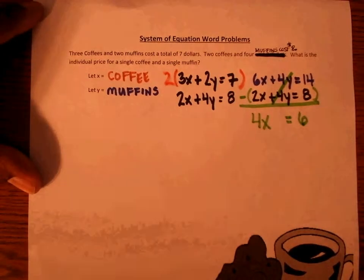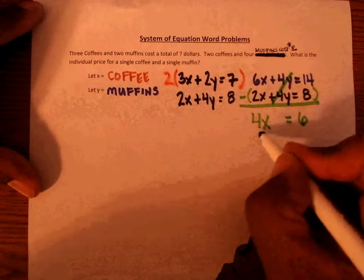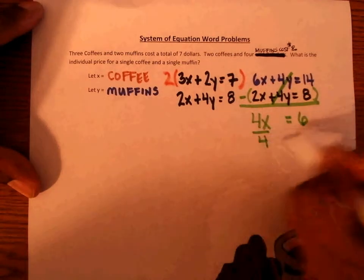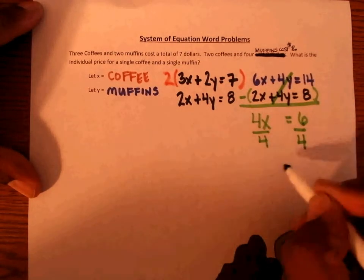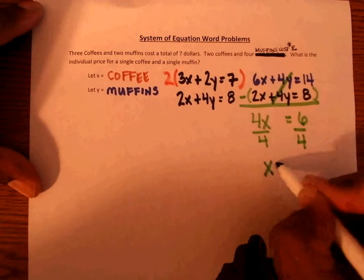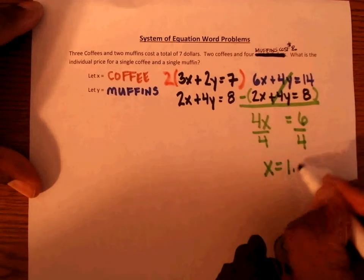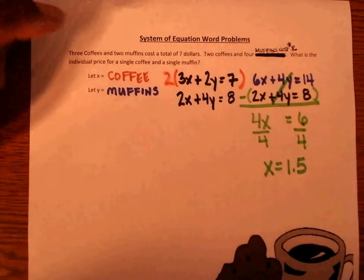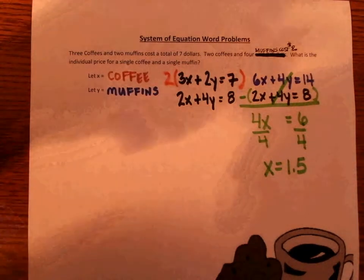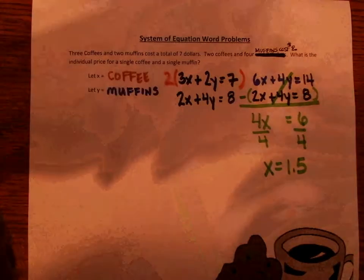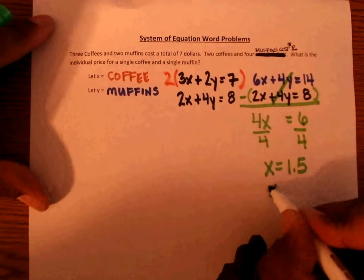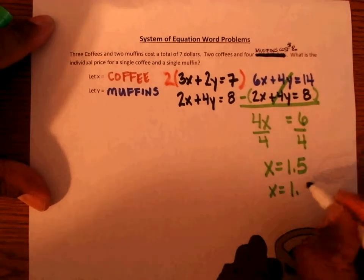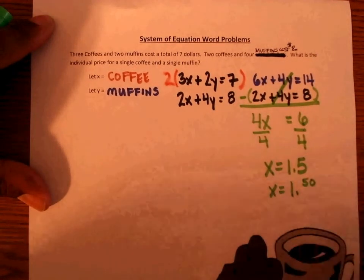To finish solving, we divide by four and X equals 1.5. However, in money, this would actually stand for a dollar and fifty cents.